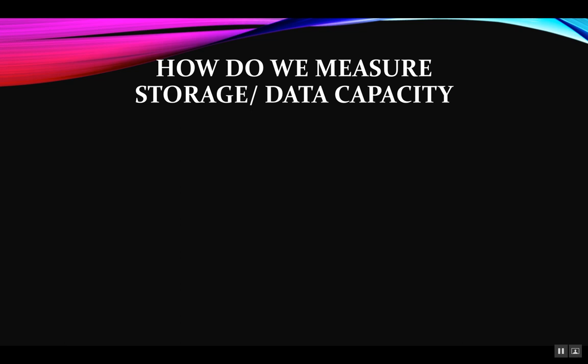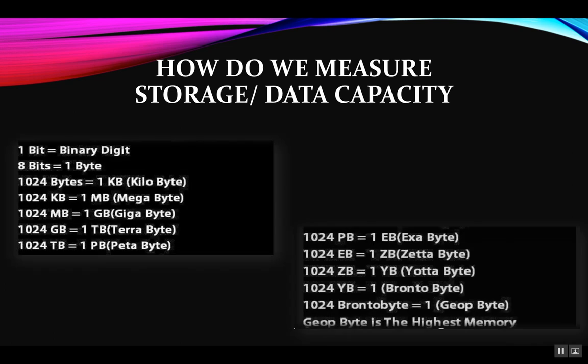Before we go on to that, let's talk about the measure of storage and data capacity. We talked about storage, primary and secondary, but what is the measure of that capacity? How do you actually measure what amount of your data is kept in any device? The major terminologies used for measuring storage are bits and bytes. One bit is basically a binary digit that is either a 1 or 0. Eight bits combine and make a byte.